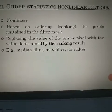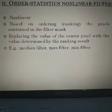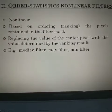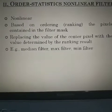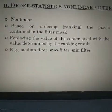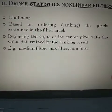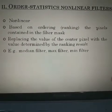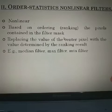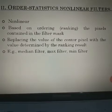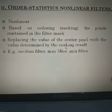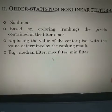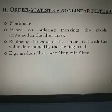The next topic in digital image processing of the spatial domain is the order-statistic nonlinear filter. This is one type of smoothing filter. It is nonlinear and is based on ordering the pixels contained in the filter mask, replacing the value of the center pixel with the value determined by the ranking result. Examples include the median filter, max filter, and min filter.